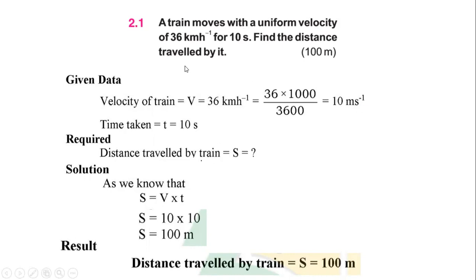The required parameter is the distance traveled by the train. In the solution, we use the formula S = VT. Putting in the V and T values: 10 into 10 gives 100 meters. In the result, the distance traveled by the train is 100 meters.